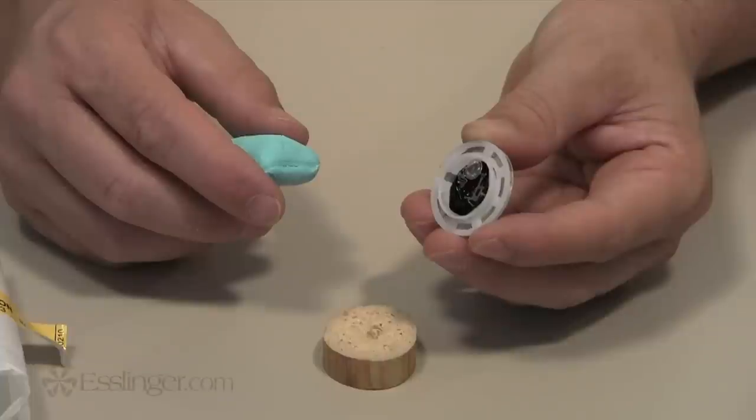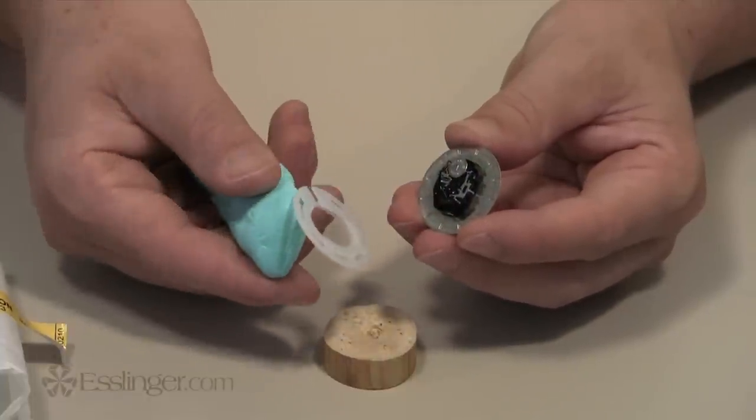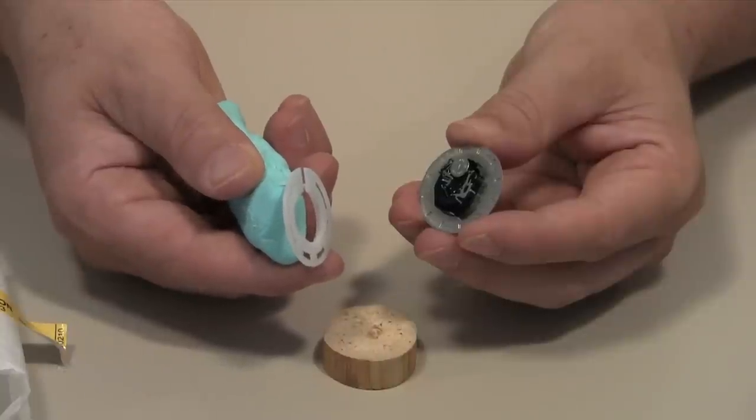Because of the consistency of Rodico putty, it gives you precise control over where you are cleaning, and can even help you remove broken pivots from watch jewels.